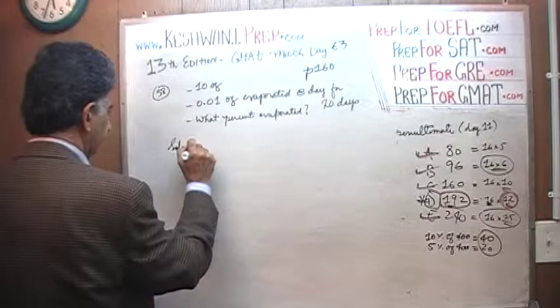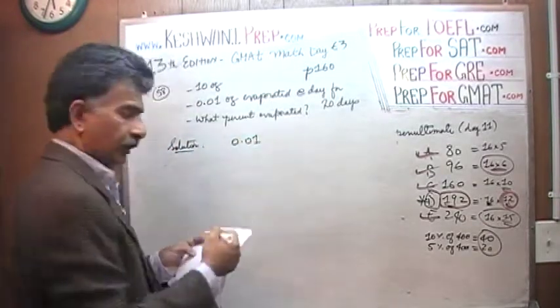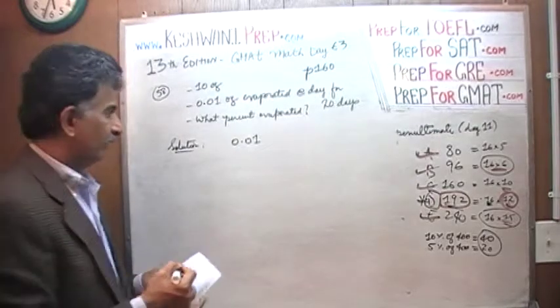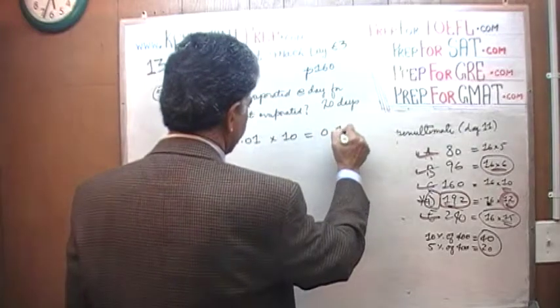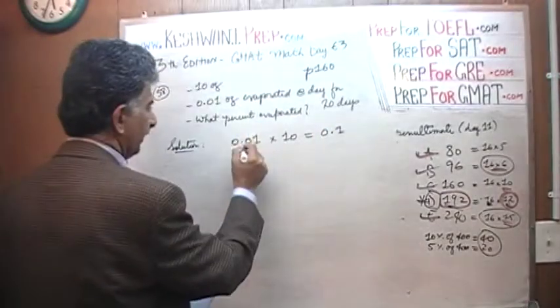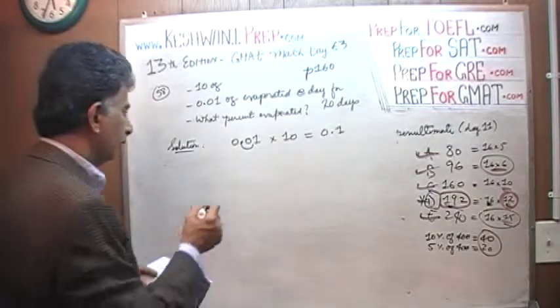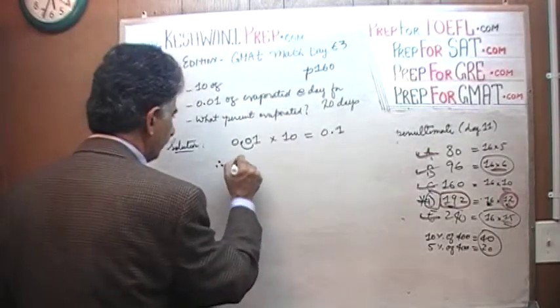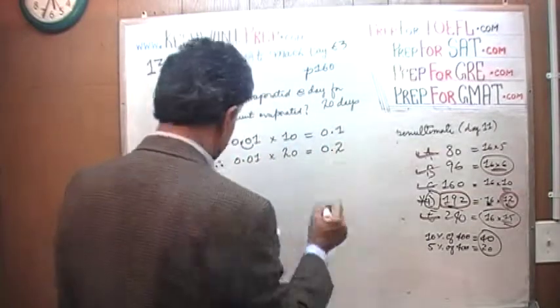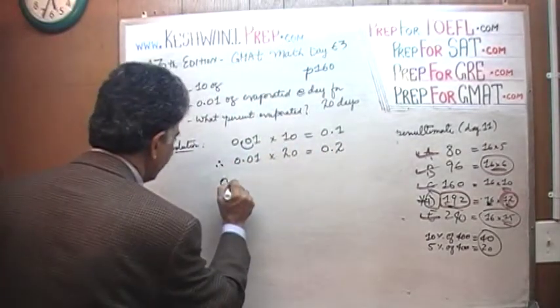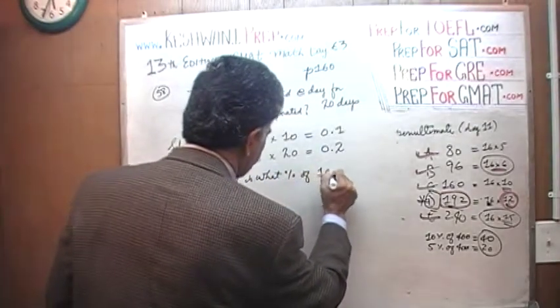Here is the solution. We have 0.01 evaporating for 20 days. We know that 0.01 times 10 is 0.1, because to multiply by 10, you just take your decimal and move it by one place. Therefore, 0.01 times 20 must be 0.2. The question simply is, 0.2 is what percent of 10?